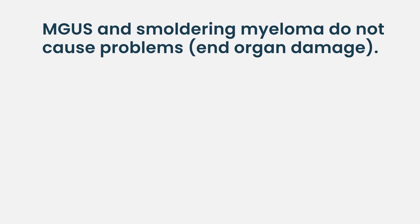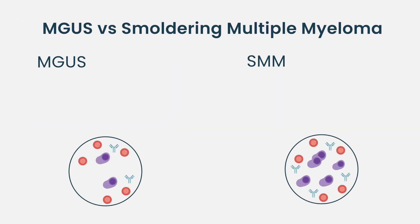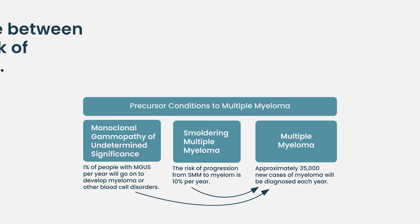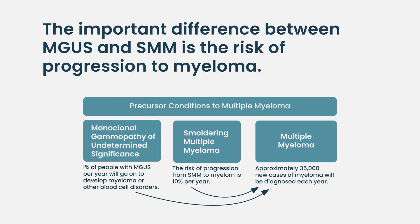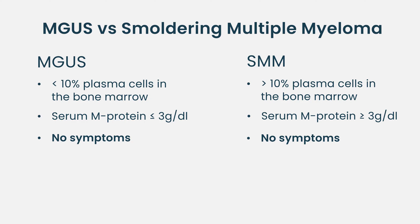The most important characteristic of MGUS and smoldering myeloma is that they are not causing problems. While there are distinctions in the amount of plasma cells in the bone marrow and the level of the abnormal monoclonal protein in the blood that differentiate between them, the differences largely have to do with the risk that over time they'll become more symptomatic. Because they're generally not causing symptoms, we usually don't do any treatment for the asymptomatic disorders.